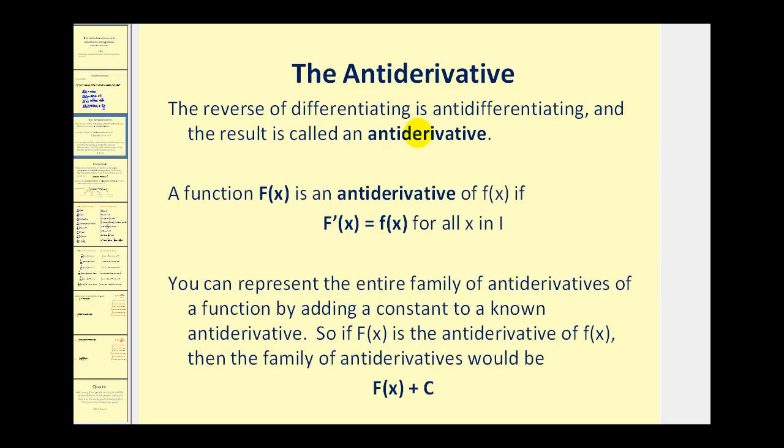So the reverse of differentiating is anti-differentiating, and the result is called the anti-derivative. A function big F(x) is the anti-derivative of little f(x) if the derivative of big F(x) is equal to little f(x). So in the previous problem, we would have had f(x) equals cosine x, and big F(x) is equal to sine x plus c, because the derivative of big F(x) is equal to small f(x).